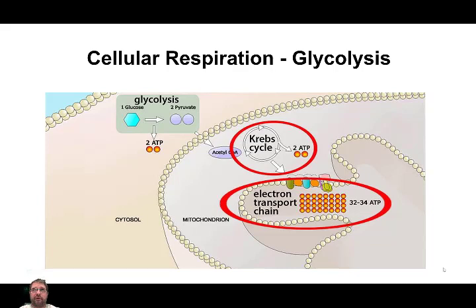So last time we were talking about photosynthesis and the Calvin cycle, or the Calvin-Benson-Basham cycle, and how glucose molecules are formed. Now we're going to talk about what happens to glucose molecules, and how do you break them down in order to get energy from that glucose molecule. We talked about how it forms and how much energy has to go in to form the glucose molecule, but now we're going to talk about how much energy can come out of that glucose molecule through the different processes.